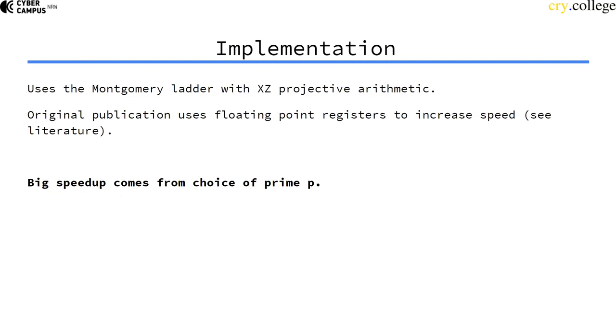So it uses the Montgomery ladder with XZ projective arithmetic as we have talked about before. In the original publication the author used floating point registers to increase the speed. You can look it up in the literature if you want to. It's not so important for our lecture here.